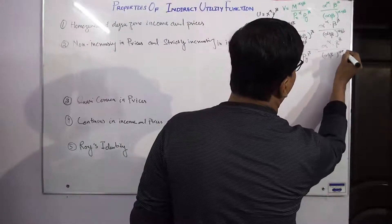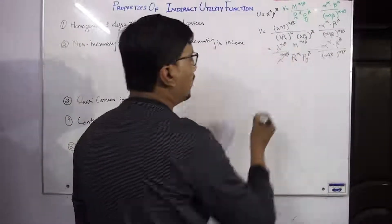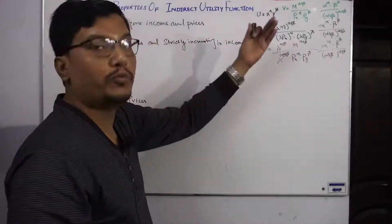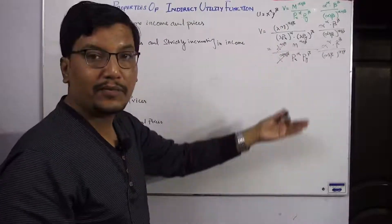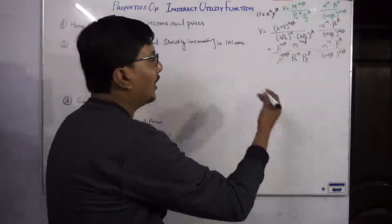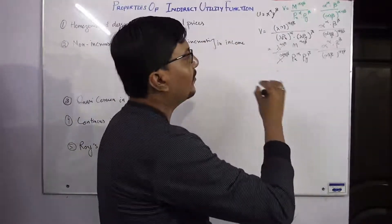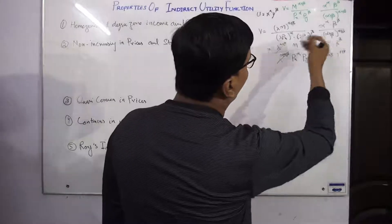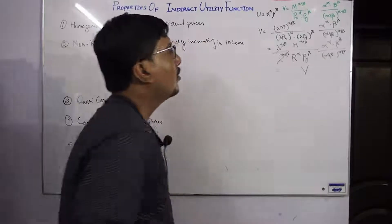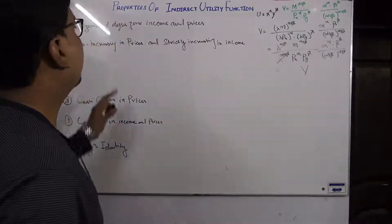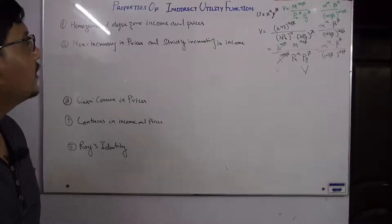We can see that the lambda terms cancel out, leaving a power of zero. By increasing prices and income in the same proportion, the whole function repeats unchanged. So we confirm that the indirect utility function satisfies the property of being homogeneous of degree zero in income and prices.